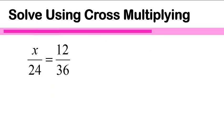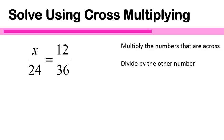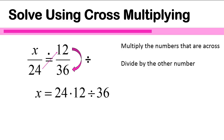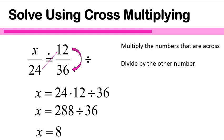In our final question, we're going to look at what happens when x is in the upper left-hand corner. Which numbers are across from each other? 24 is across from 12, so we'll multiply that. Then we divide by the number that's left. x is equal to 24 times 12 divided by 36. 24 times 12 gives us 288, and 288 divided by 36 is equal to 8.